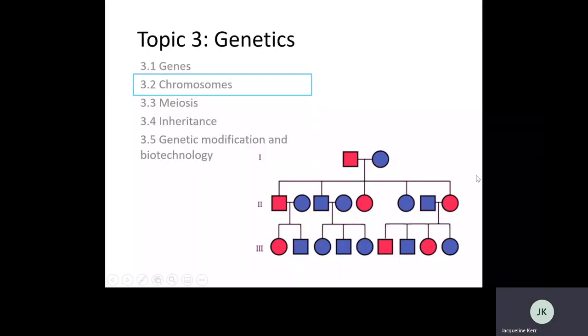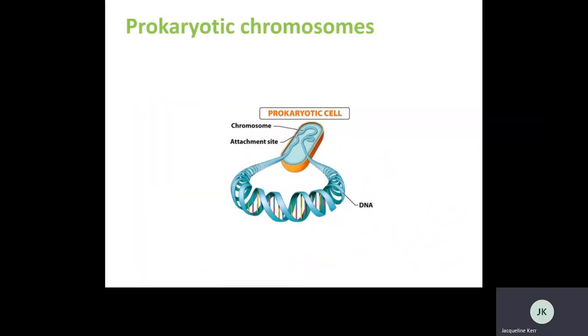3.2 chromosomes. Let's start by looking at prokaryotes. So we're talking about bacteria here. Recall that the word prokaryote means before the kernel or before the nucleus, since DNA is not contained within a discrete structure, no nucleus present here.